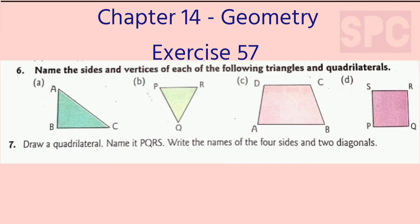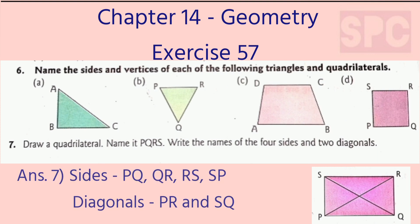Question 7: Draw a quadrilateral and name it PQRS. Write the names of the four sides and two diagonals. You will draw a quadrilateral — any figure having four sides, be it a square or rectangle. Name it PQRS. The names of the four sides are PQ, QR, RS, and SP. And the two diagonals are PR and SQ.